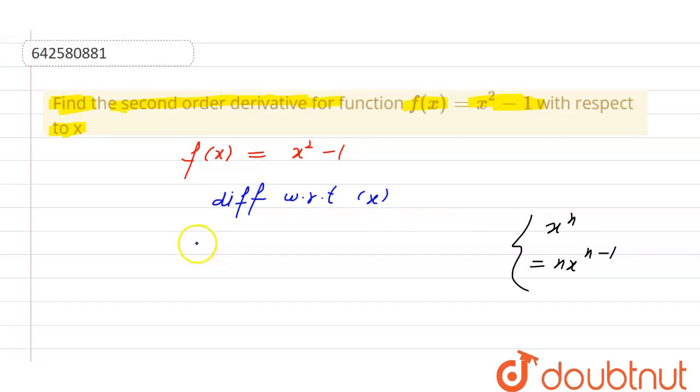So, now the differentiation will be f dash x which is equal to differentiation of x square will be 2x, means power becomes coefficient and it will decrease by 1.